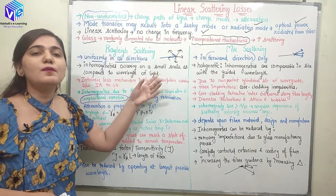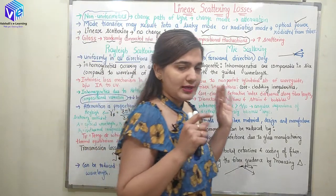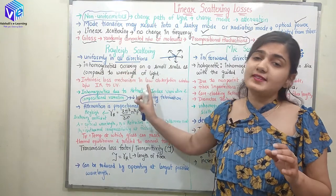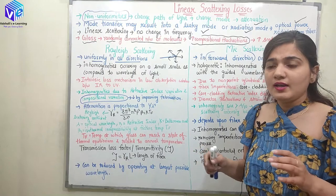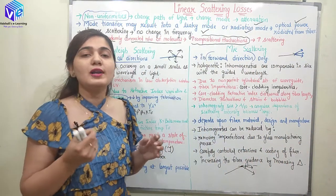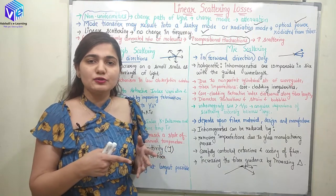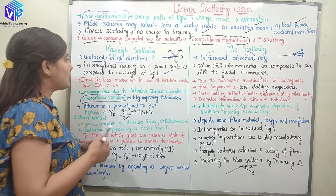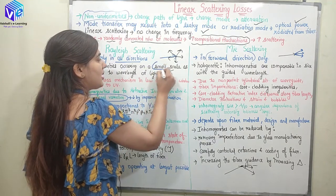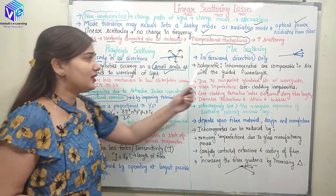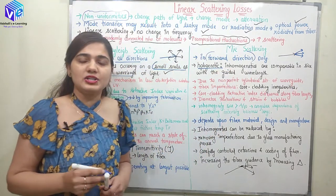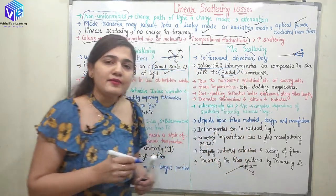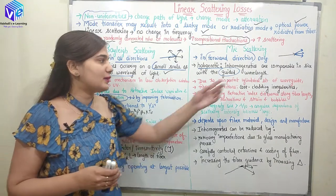In Rayleigh scattering, the inhomogeneities occur on a small scale compared to the wavelength. Whatever wavelength of light I am sending through the optical fiber, the inhomogeneities are very small compared to that wavelength, and then only Rayleigh scattering occurs — similar to how atmospheric particles are very small compared to the wavelength of sunlight. In Mie scattering, the inhomogeneities are comparable to the wavelength of the guided light.